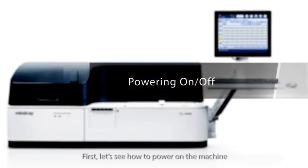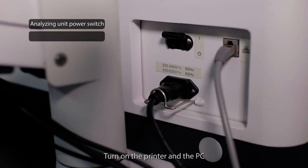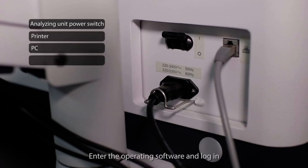First, let's see how to power on the machine. Turn on the analyzing unit power switch. Turn on the printer and the PC. Enter the operating software and log in.